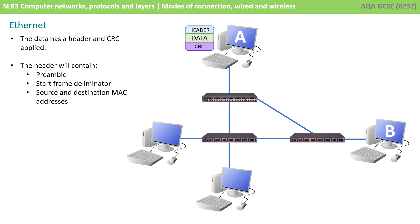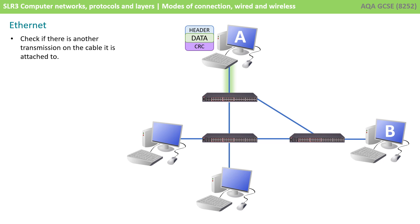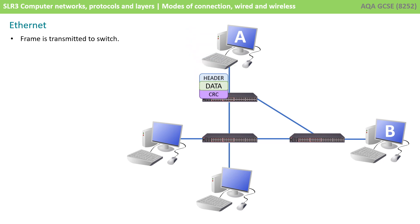The first thing that happens is the data has its header and CRC applied. The header includes the preamble, the start frame delimiter, and the source and destination MAC address. Before the computer transmits this frame, it checks whether there's another communication on the cable it's attached to. Seeing that there's no communication on the line, the frame is then transmitted to the switch.